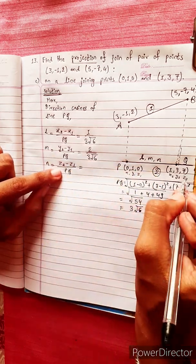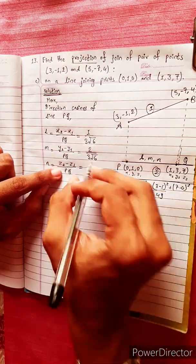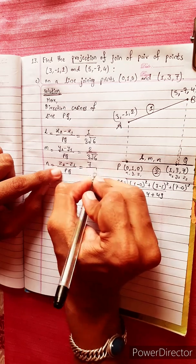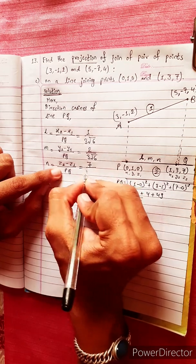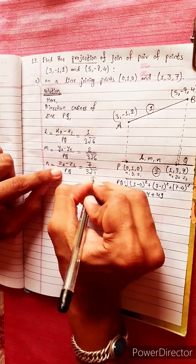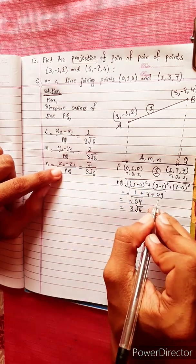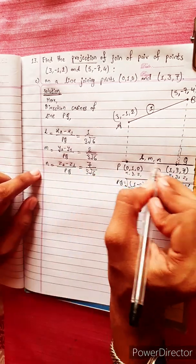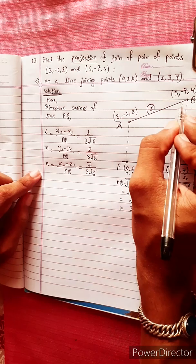z2 minus z1: 7 minus 0, divided by 3 root 6. It's called element i for the same line. It's called projection.